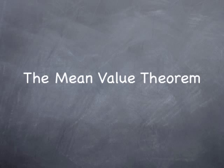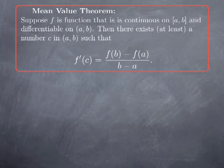Now we're turning to the Mean Value Theorem, which is a more general form of Rolle's Theorem. Let's go straight to the statement. We suppose that f is a function that is continuous on the closed interval a, b, and differentiable on the open interval a, b. These two assumptions are just like the first two assumptions in Rolle's Theorem, but we drop the third assumption, which was that f(a) and f(b) are equal.